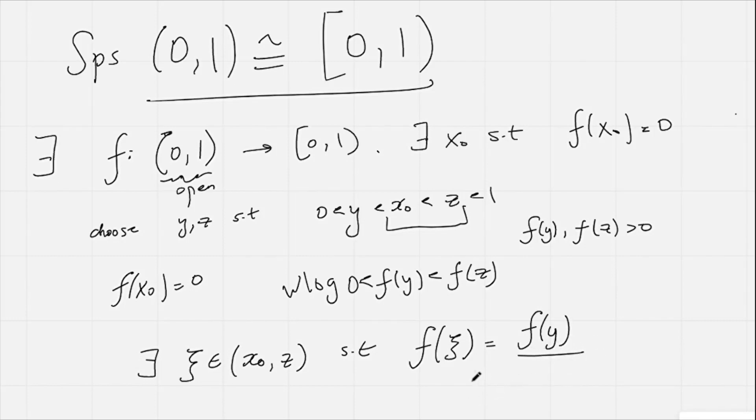We have that f(ψ) = f(y), but since f is bijective, that means that ψ must equal y. But this is impossible, because up here we've said that y < x₀.